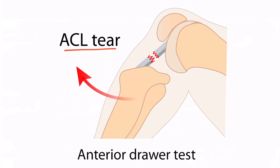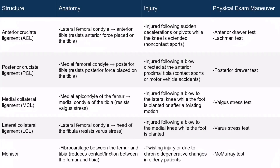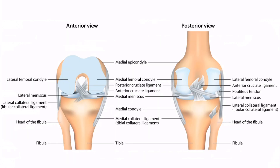The posterior cruciate ligament, or PCL, runs from the medial femoral condyle to the posterior aspect of the tibia, and it resists posterior force placed on the tibia. If we go back to the overview image, you can see the PCL right here. Focusing on the posterior view, notice that it moves from the medial femoral condyle to the posterior aspect of the tibia.